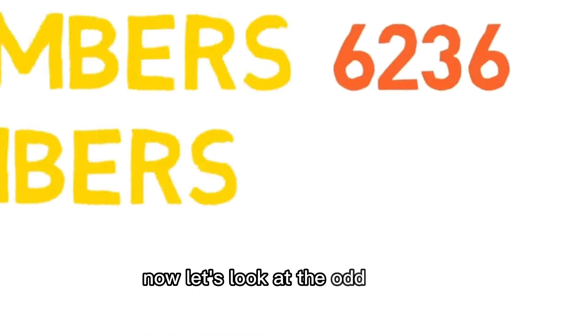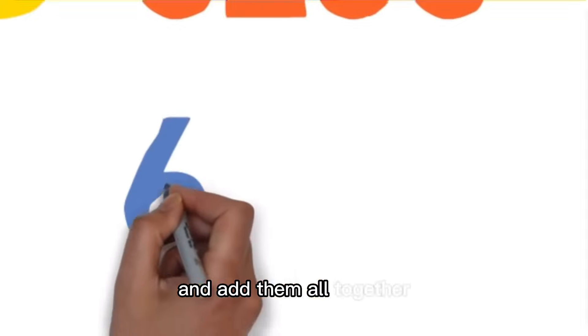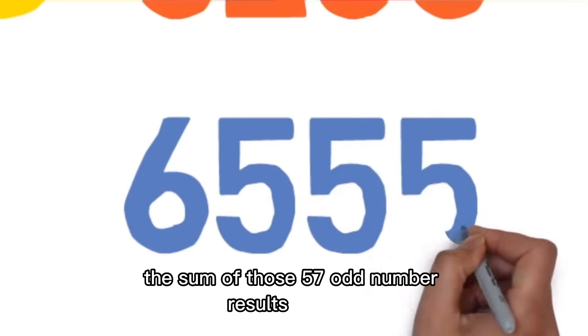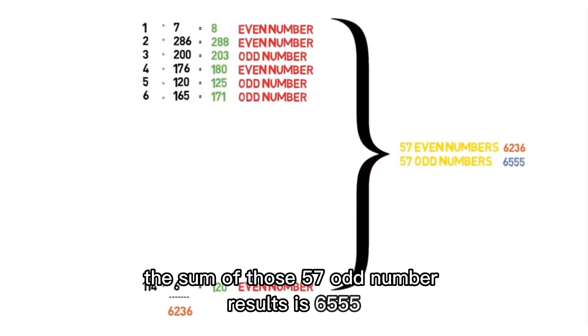Now let's look at the odd number results and add them all together. The sum of those 57 odd number results is 6,555.